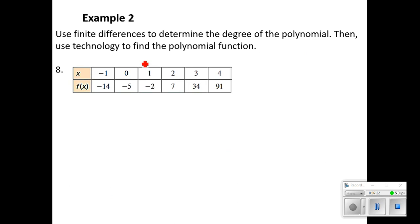Example two. Use finite differences to determine the degree of the polynomial, then use technology to find the polynomial function. We want to check and make sure that our x's are equally spaced. And sure enough, we are covering a distance of 1 between each of those x values. Now let's start looking at the differences.